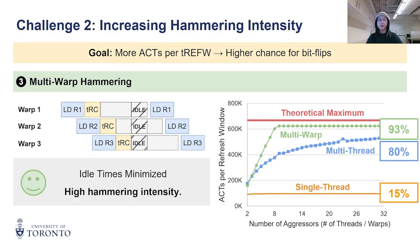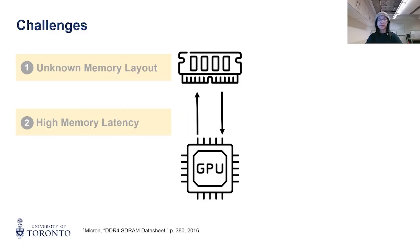With multi-warp hammering, we can achieve up to 620K activations per refresh window using 8 or more warps. This reaches 93% of the theoretical maximum and provides enough activations to reliably trigger a bit flip.